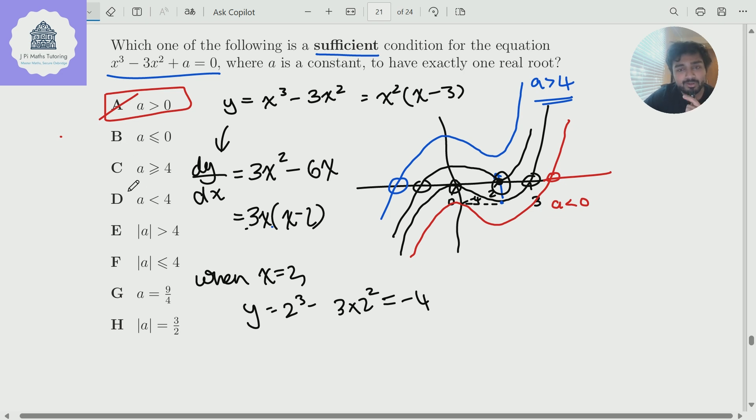Similarly, I can rule out option D. Because if A was less than four was the correct answer, so that whenever A is less than four, this cubic has one real solution, then that would mean that B is correct as well. Because if A is less than or equal to zero, certainly it's less than four. Cool.